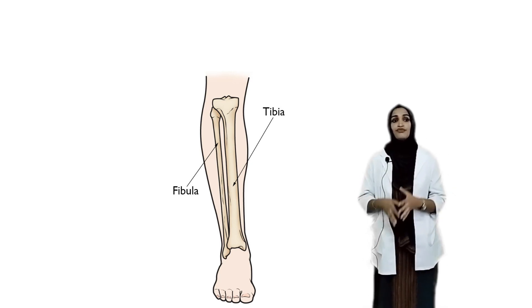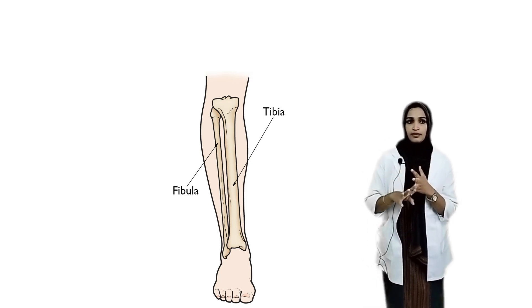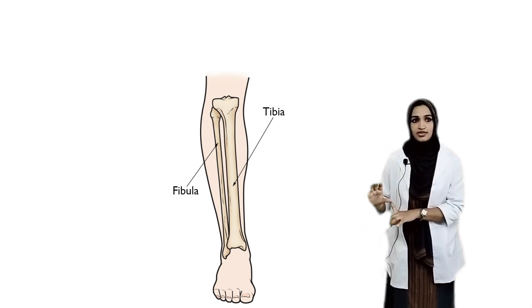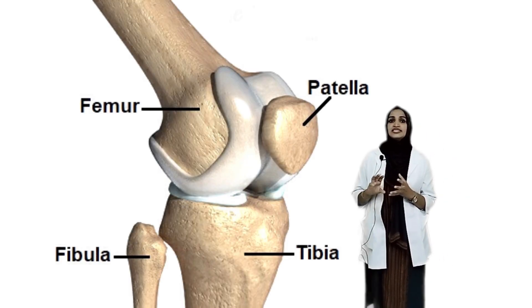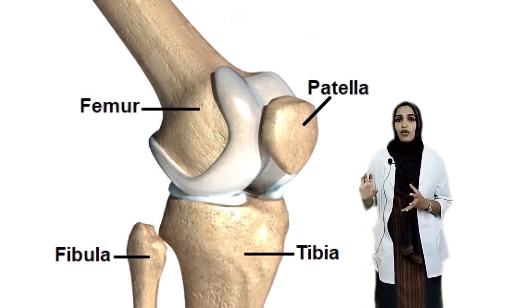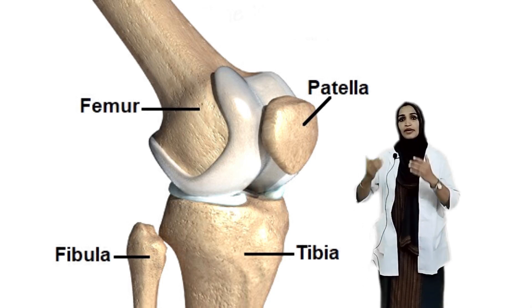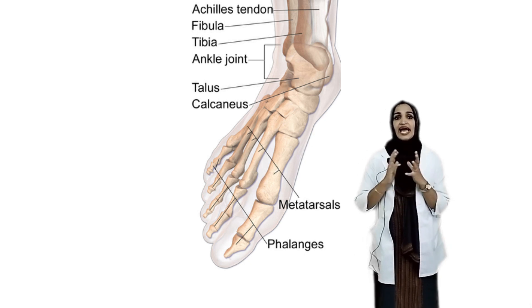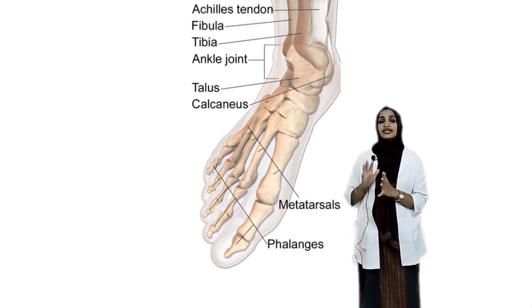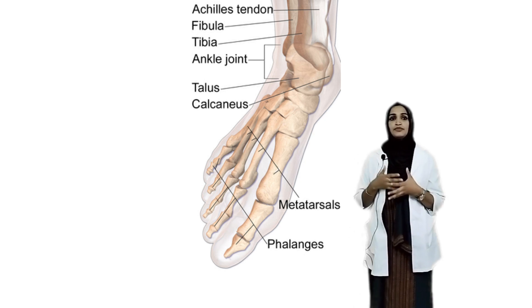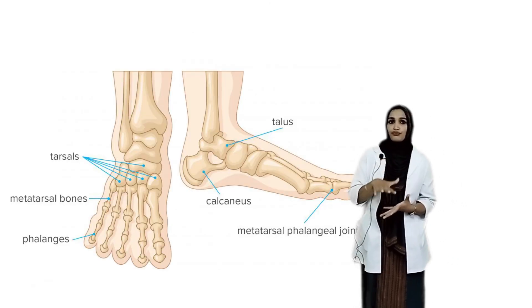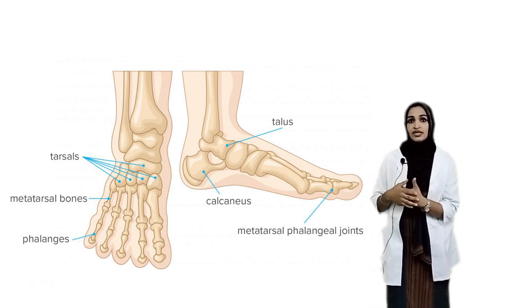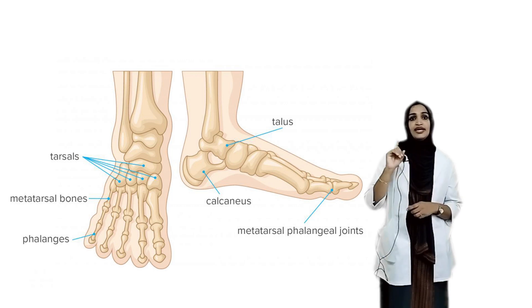The lower limb also consists of the tibia and fibula, which are articulated with the femur at the knee joint. The patella, or kneecap, is a triangular sesamoid-shaped bone. The tarsals are seven in number, also known as ankle bones. The metatarsals are the bones of the foot, five in number. The phalanges are 14 in number — three in each toe and two in the big toe.